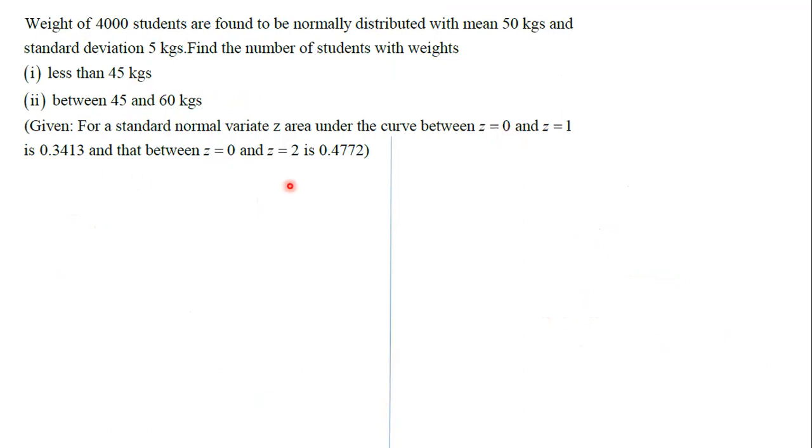So we'll take the mean given to us as 50, standard deviation given as 5, and number of students are 4000. So here, we'll substitute for 45, less than 45.